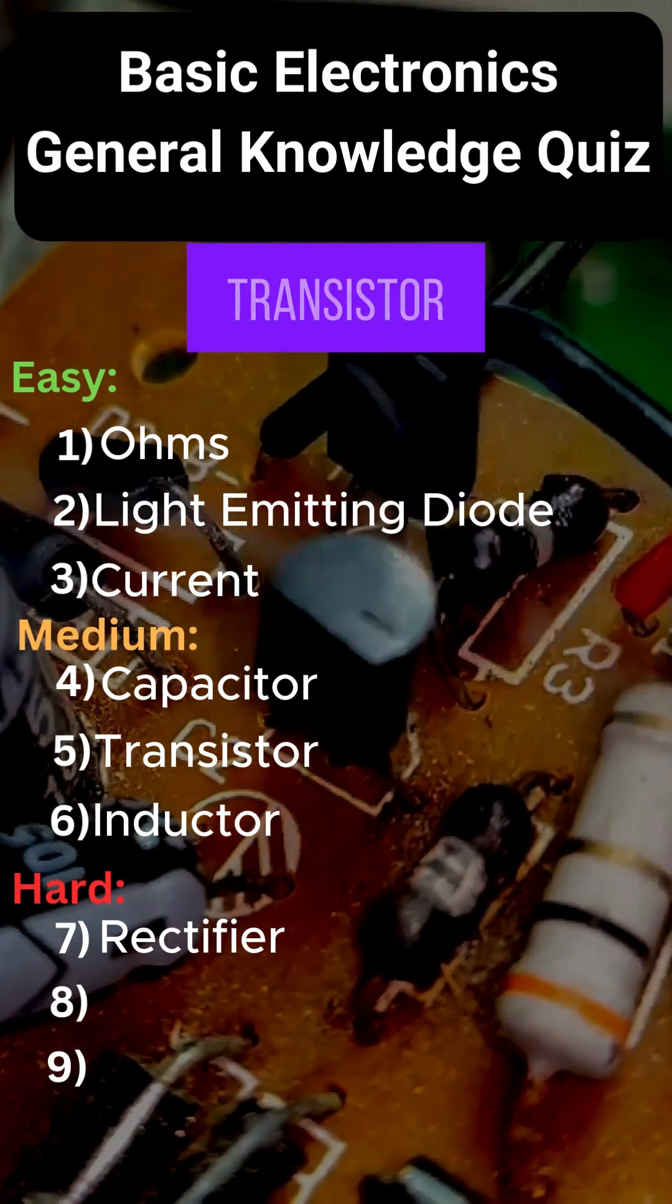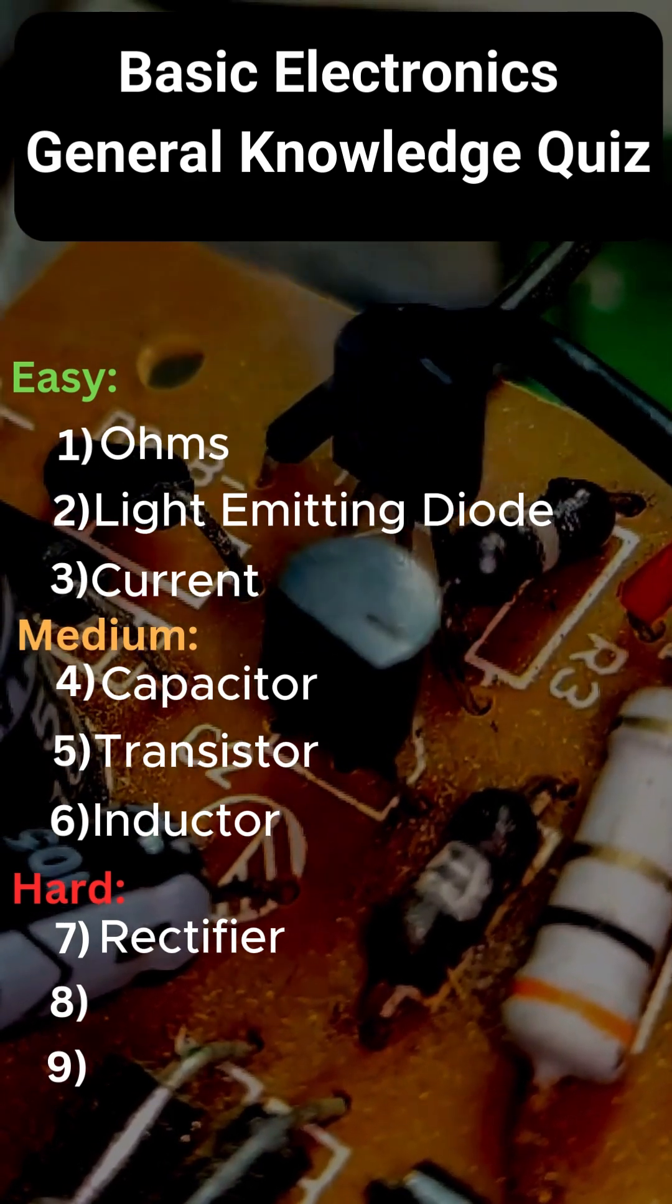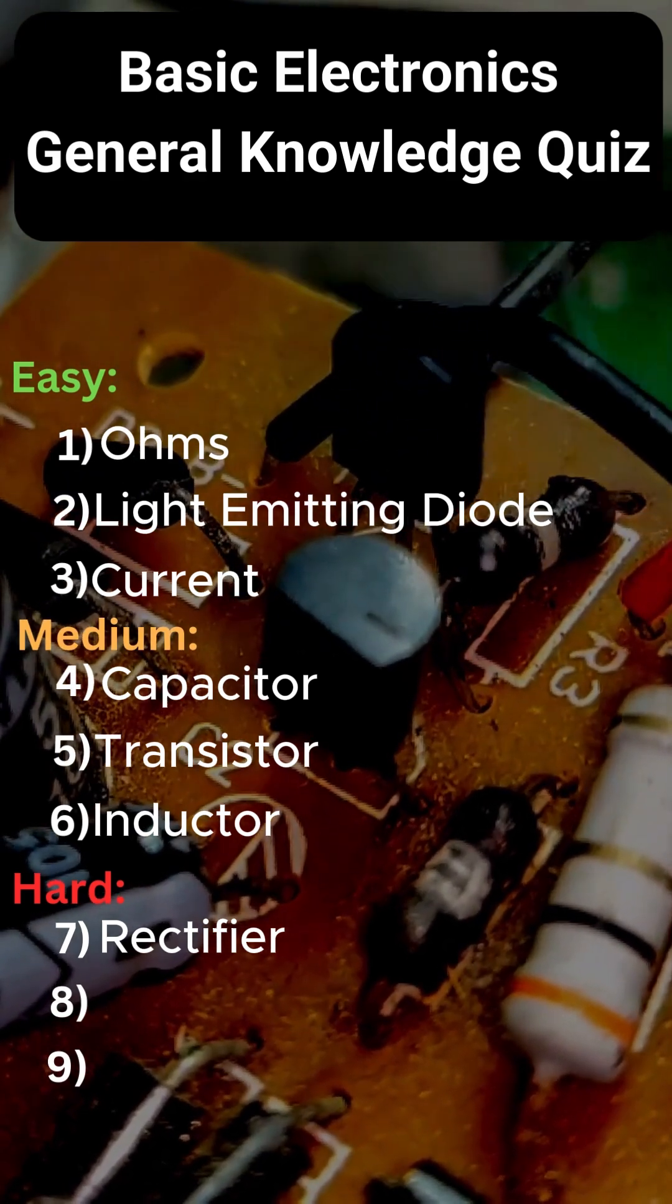The region in a transistor where both junctions are reverse biased is called? The cutoff region.